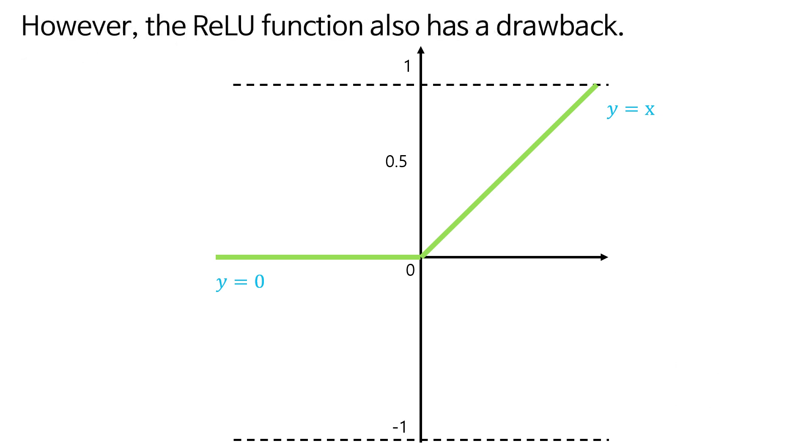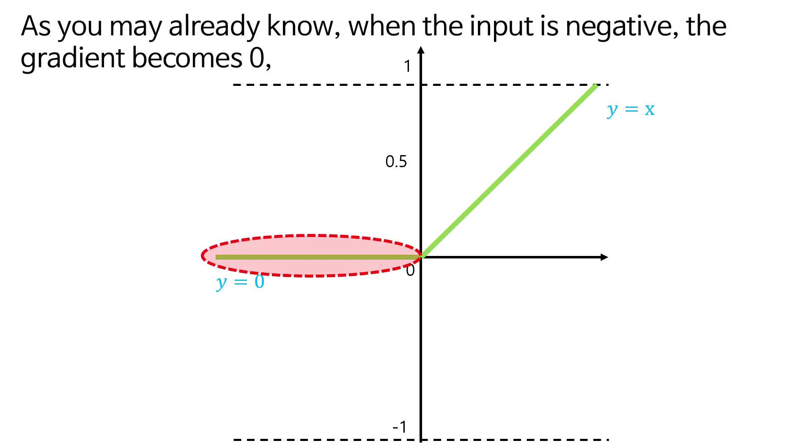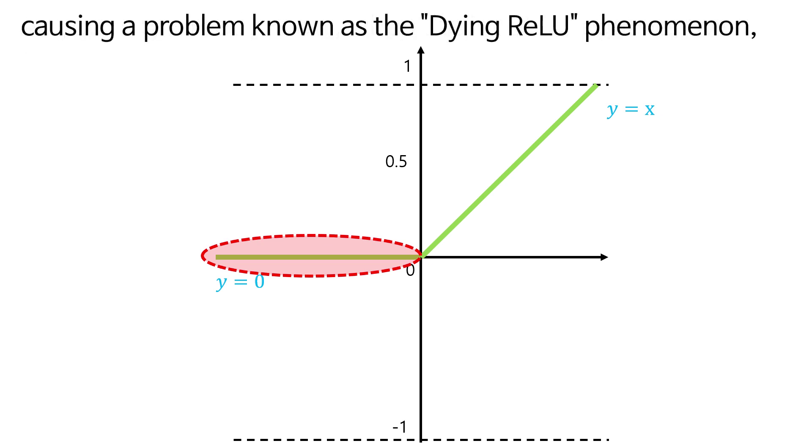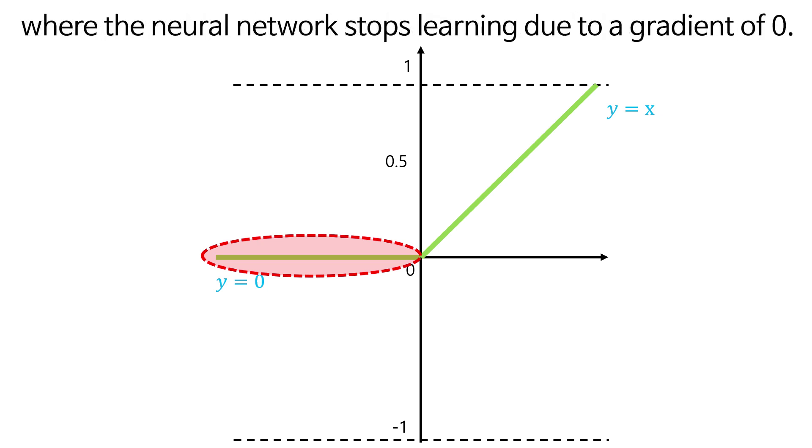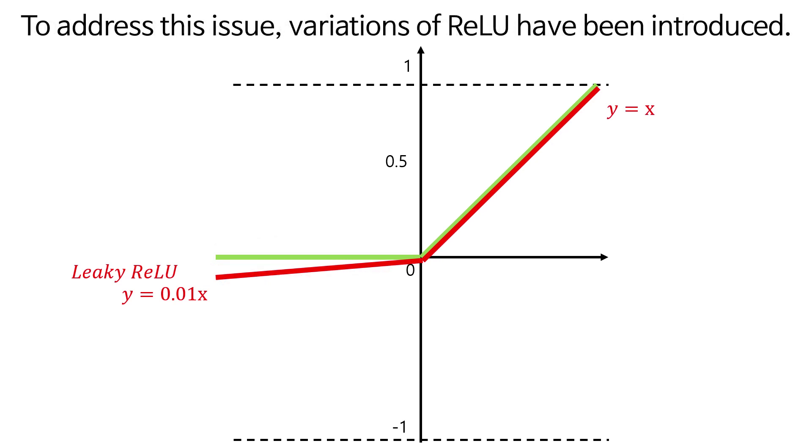However, the RELU function also has a drawback. As you may already know, when the input is negative, the gradient becomes zero, causing a problem known as the dying RELU phenomenon, where the neural network stops learning due to a gradient of zero. To address this issue, variations of RELU have been introduced.